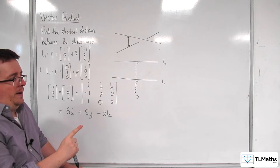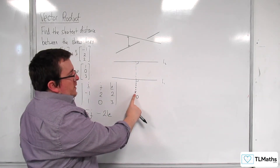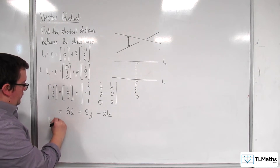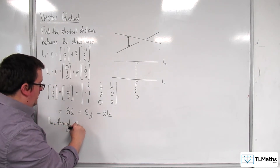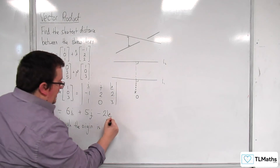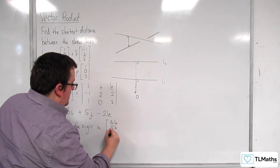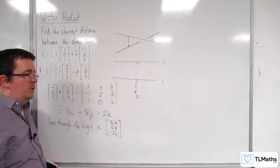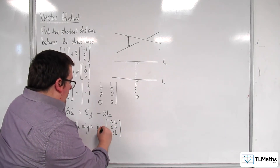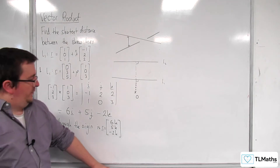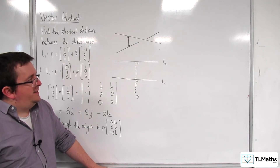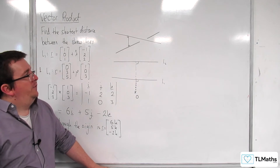I want the line through the origin that is perpendicular to both. That line would be r = (6k, 5k, −2k), because when k = 0 it passes through the origin. This is a line going through the origin that will intersect L1 and L2 at right angles.